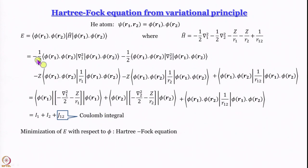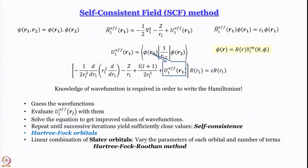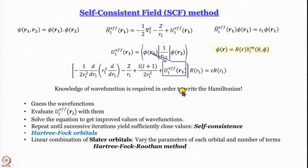The idea is that if we minimize the expression for energy with respect to phi, we get the Hartree-Fock equation, from which we get the upper bound on the energy of the system. The problem is that it is not just an ordinary differential equation — it is a differential equation in which the operator contains the solution. So unless you know the solution you cannot set up the equation, and unless you set up the equation you cannot know the solution. It is a catch-22 situation.